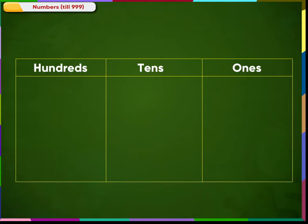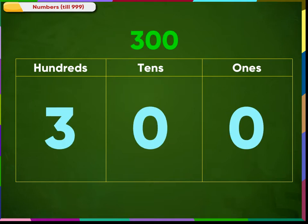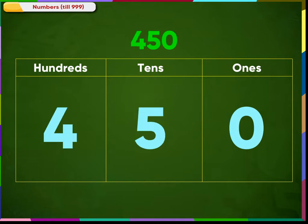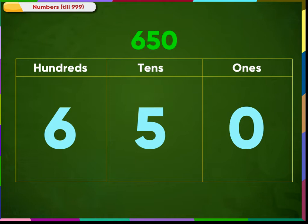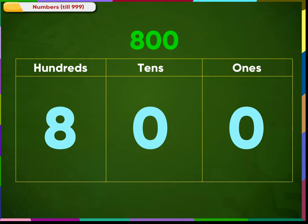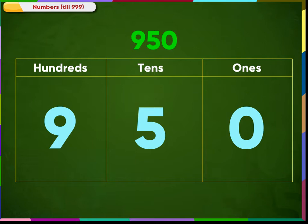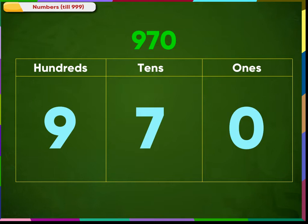Counting in the similar manner, we get 250, 300, 350, 400, 450, 500, 550, 600, 650, 700, 750, 800, 850, 900, 950, 960, 970, 980, 990.